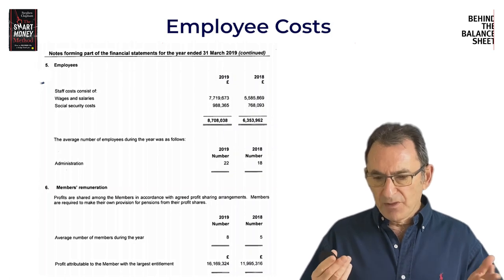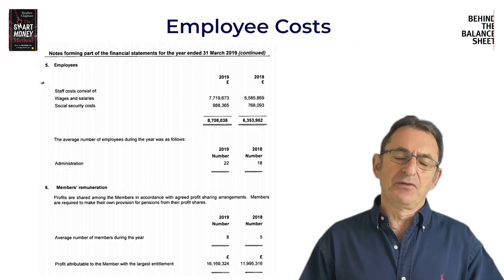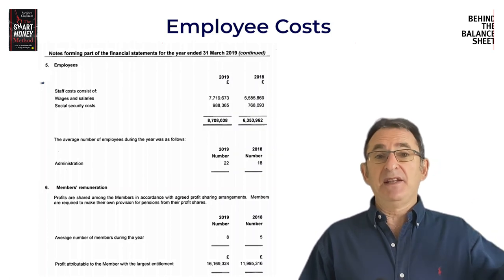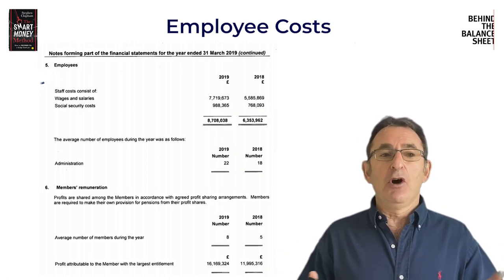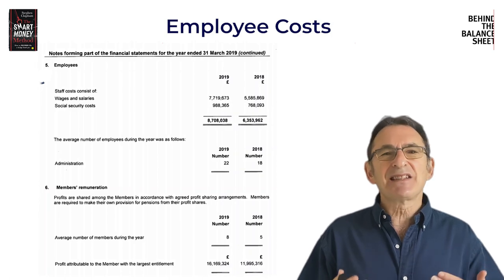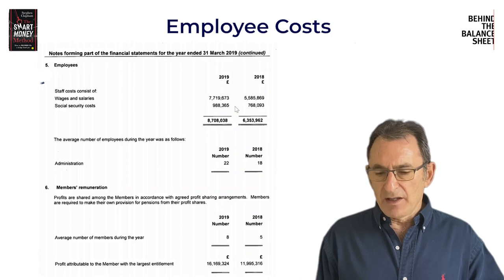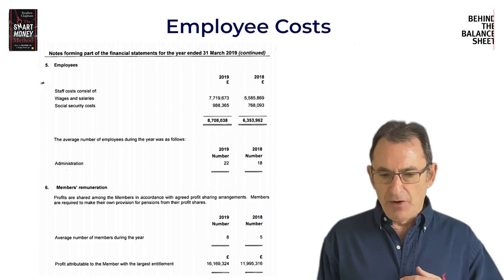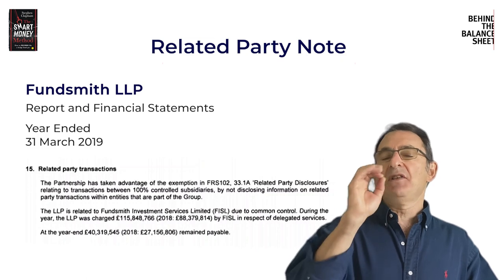You can see that the highest paid member — partner — took home 16 million pounds in the last financial year under review. Now that could be Terry or it could be one of his colleagues; you wouldn't necessarily know, but you'd assume it would be the founder. And that doesn't sound like much — 10% of the turnover, does it? But let's look a bit further. The business only had 8.7 million of employee costs. But look at Note 15, the very last note, which has related party transactions.